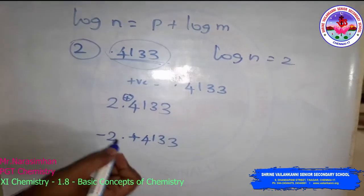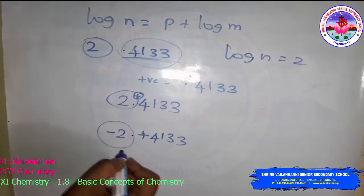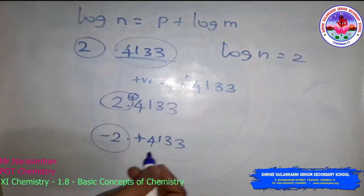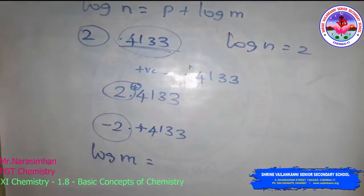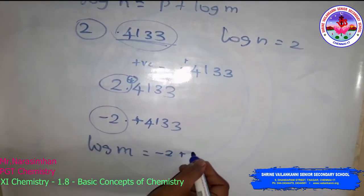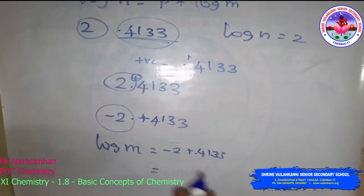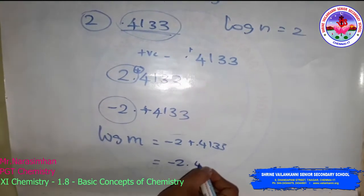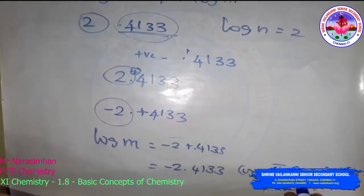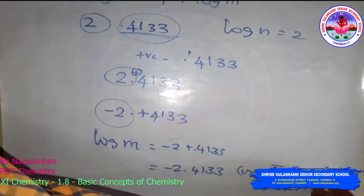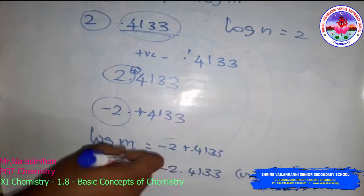To avoid confusion when the characteristic is negative, we write log n as 2 bar 0.4133 — placing the minus sign above the number 2 and calling it 'two bar'. So instead of writing minus 2 plus 0.4133, we write 2̄.4133. This is the standard notation used to represent a logarithm with a negative characteristic.